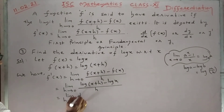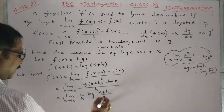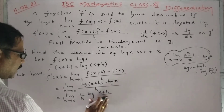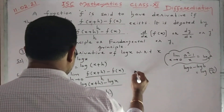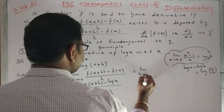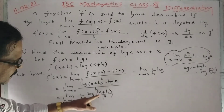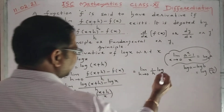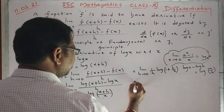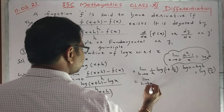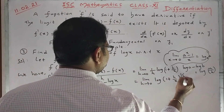Applying the first principle with f(x) = log x: f'(x) = limit h→0 of [log(x+h) - log x] / h = limit h→0 of (1/h) · log((x+h)/x). Splitting, this becomes limit h→0 of (1/h) · log(1 + h/x). I am shifting 1/h into the power: limit h→0 of log(1 + h/x)^(1/h).